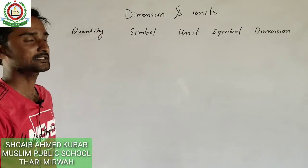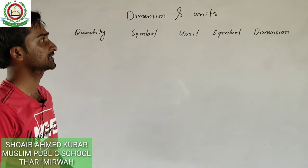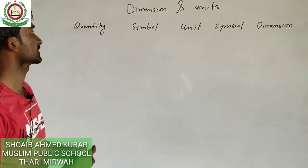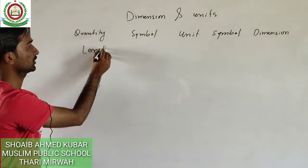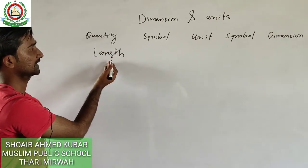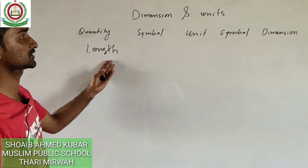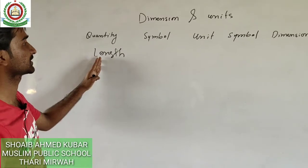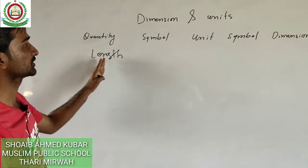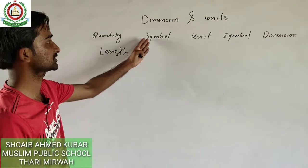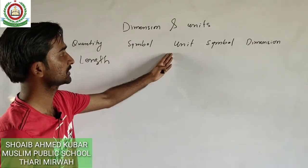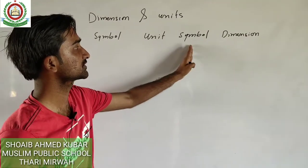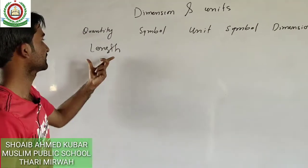Assalamu alaikum students. We have covered the previous topic of dimension, and today we are going to learn the dimension and unit of some physical quantities. For example, we have a physical quantity length. We are going to learn the symbol, then we are going to learn its unit, and then we are going to learn its dimension and its symbolic form.